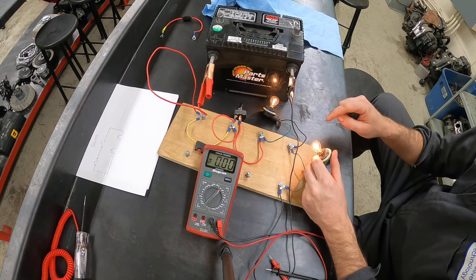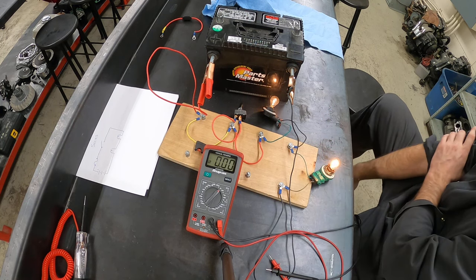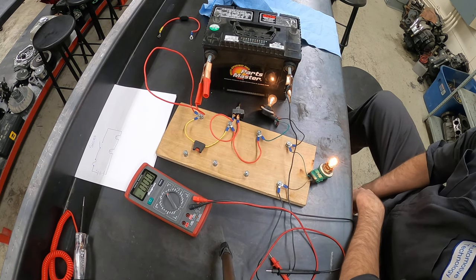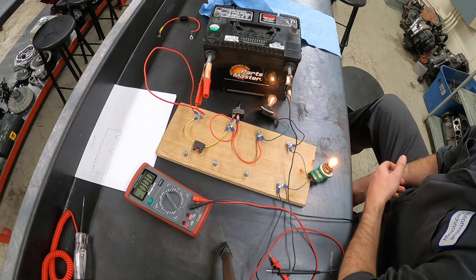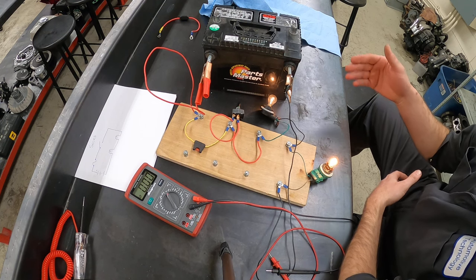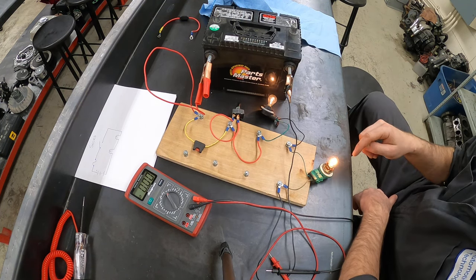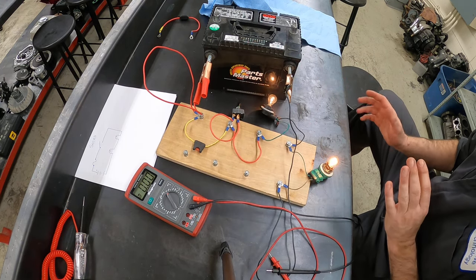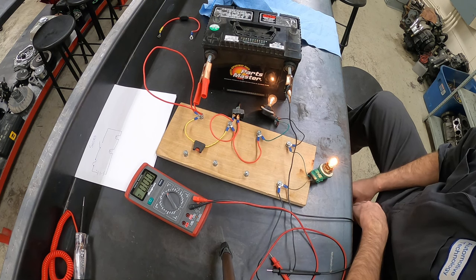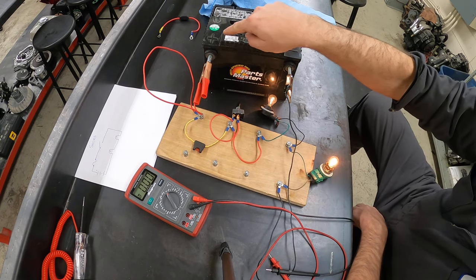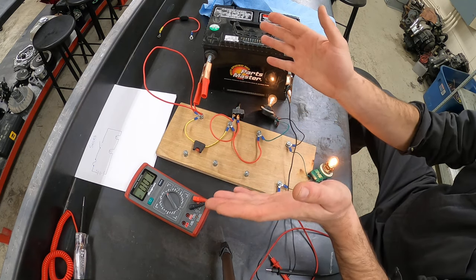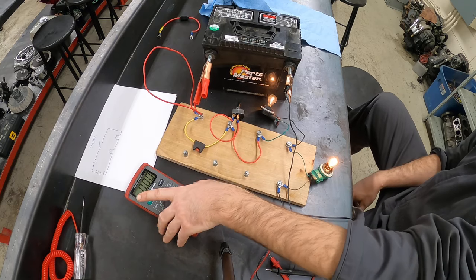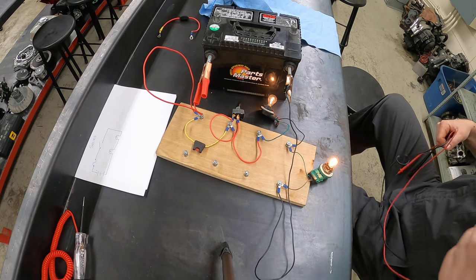Something to know about a series circuit is that the current is the same everywhere. So if you were going to measure the amount of current flowing throughout this circuit, it wouldn't matter if you measured it at the positive battery cable, the negative, or between any of the light bulbs. It would all be the same because electricity only has one path to travel. There's no branching of electricity off in a series circuit.